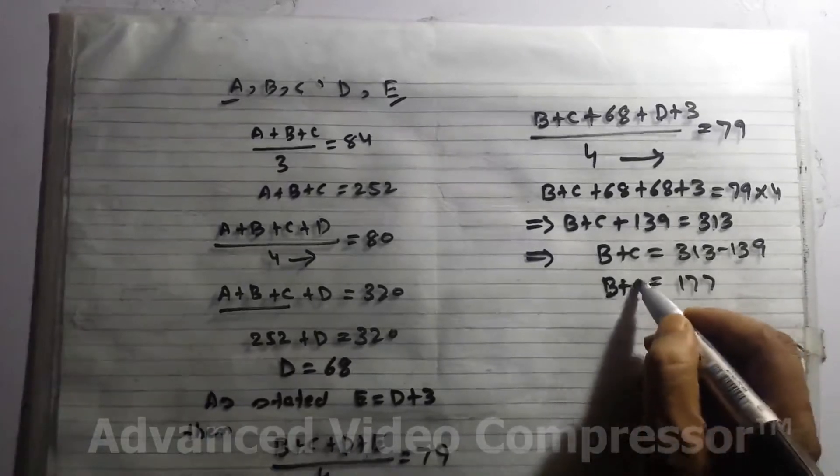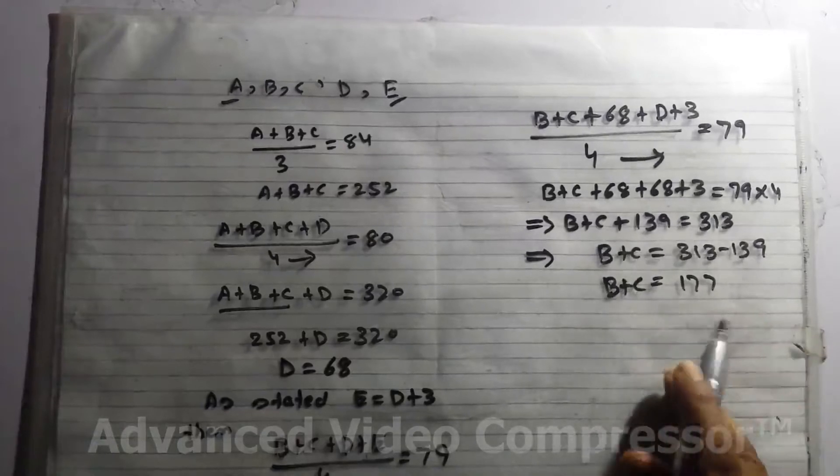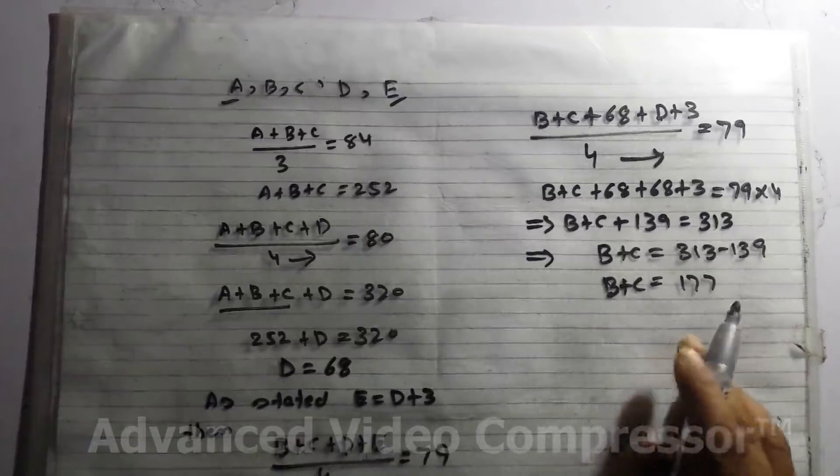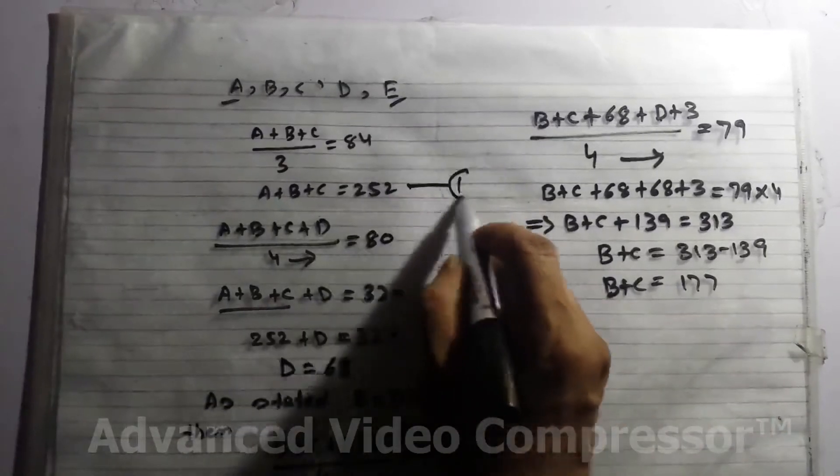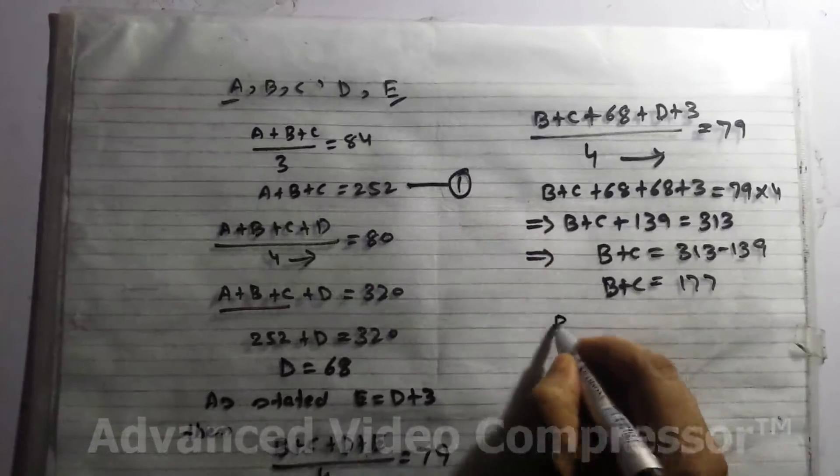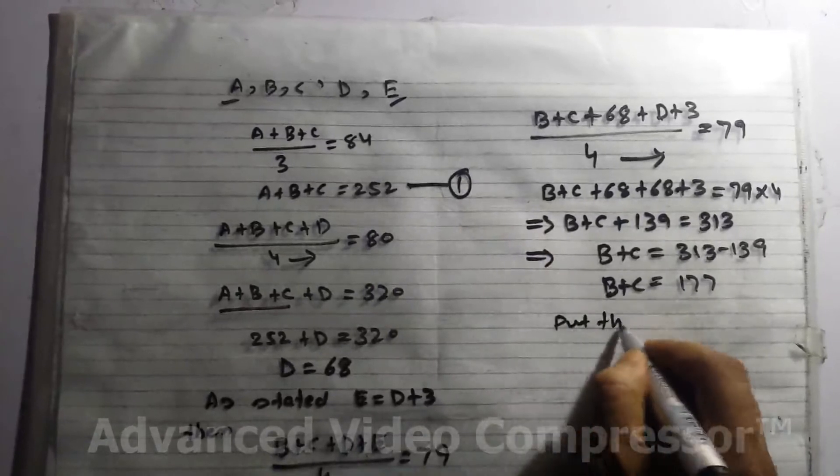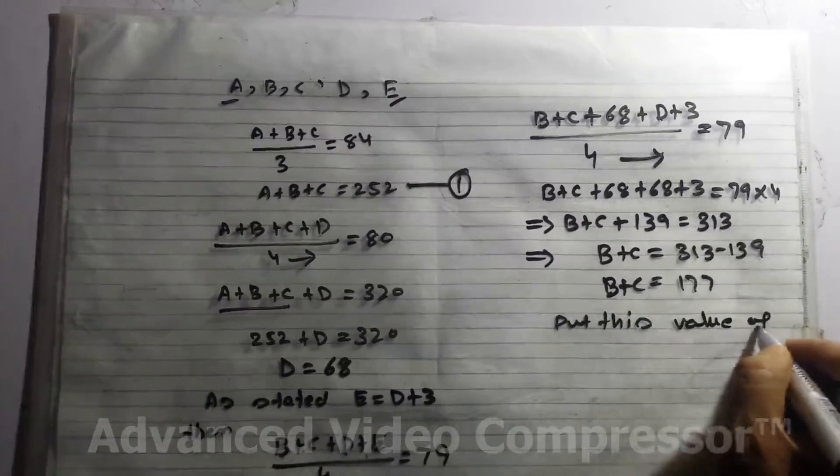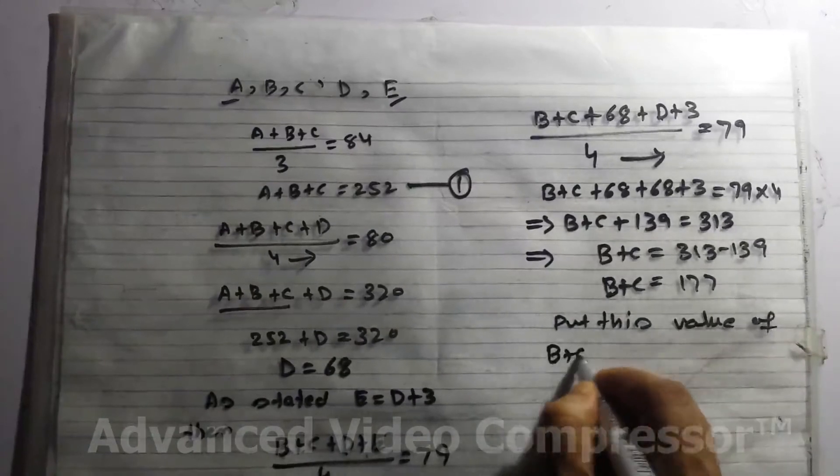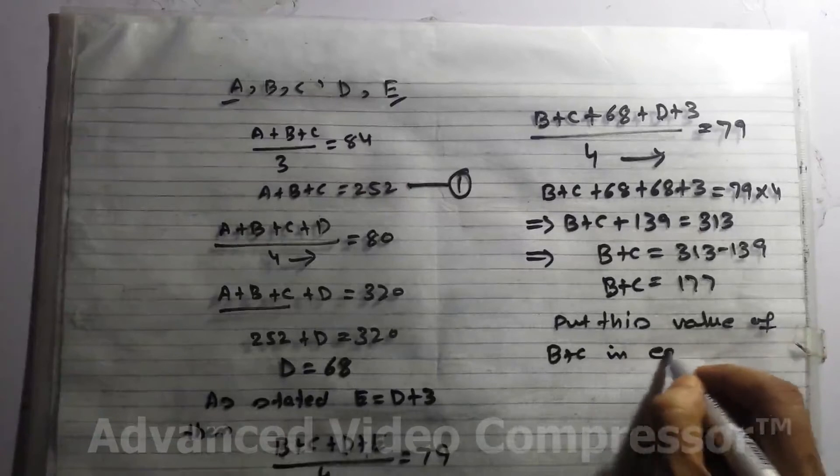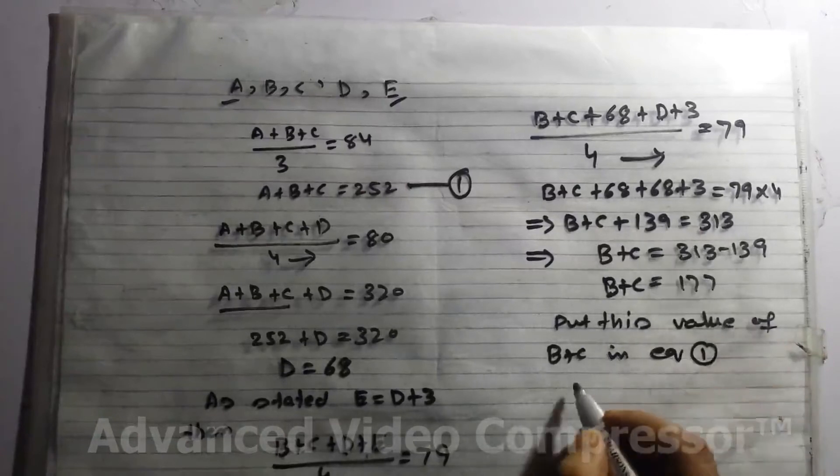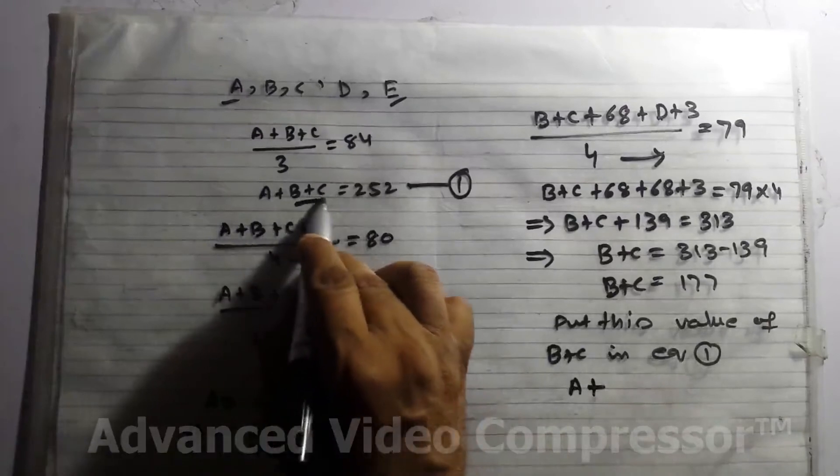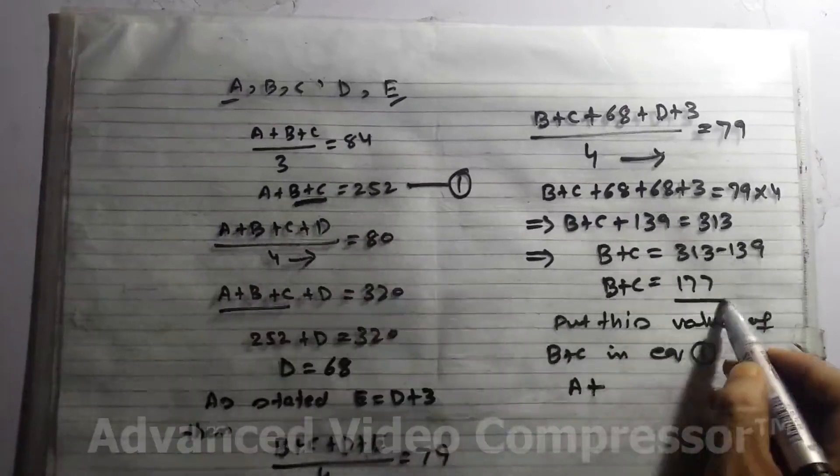Now we have to find the weight of A. So we come to equation 1, put this value of B + C in equation 1. A + B + C, here it is B + C, we write 177, equals 252.